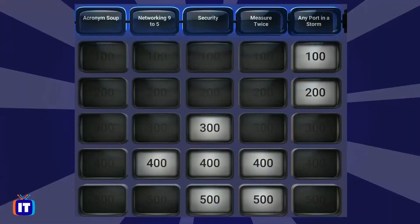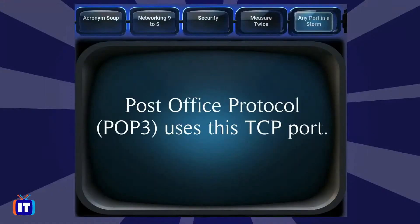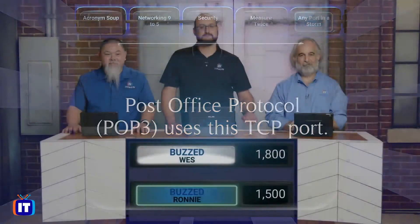Ronnie has control. Networking 9 to 5 for $400. This is the fifth layer of the OSI model, responsible for maintaining connections between applications. Then, Any Port in a Storm for $100: Post Office Protocol or POP3 uses this TCP port. Wes answers: what is port 110? Port 110 is the answer.